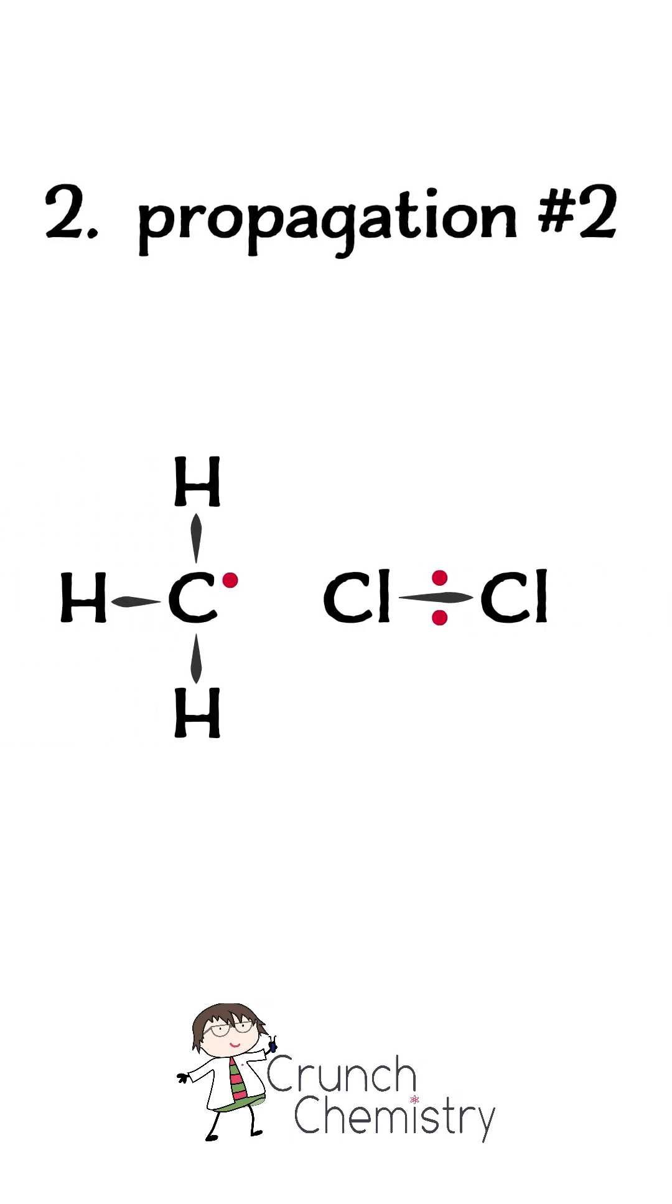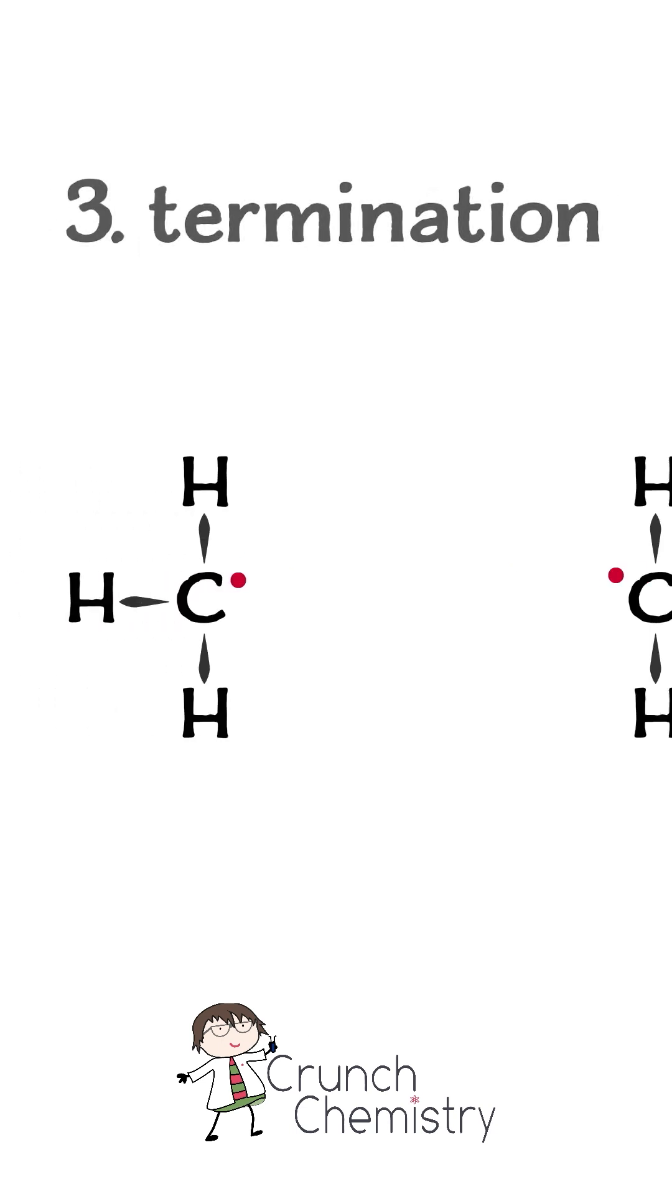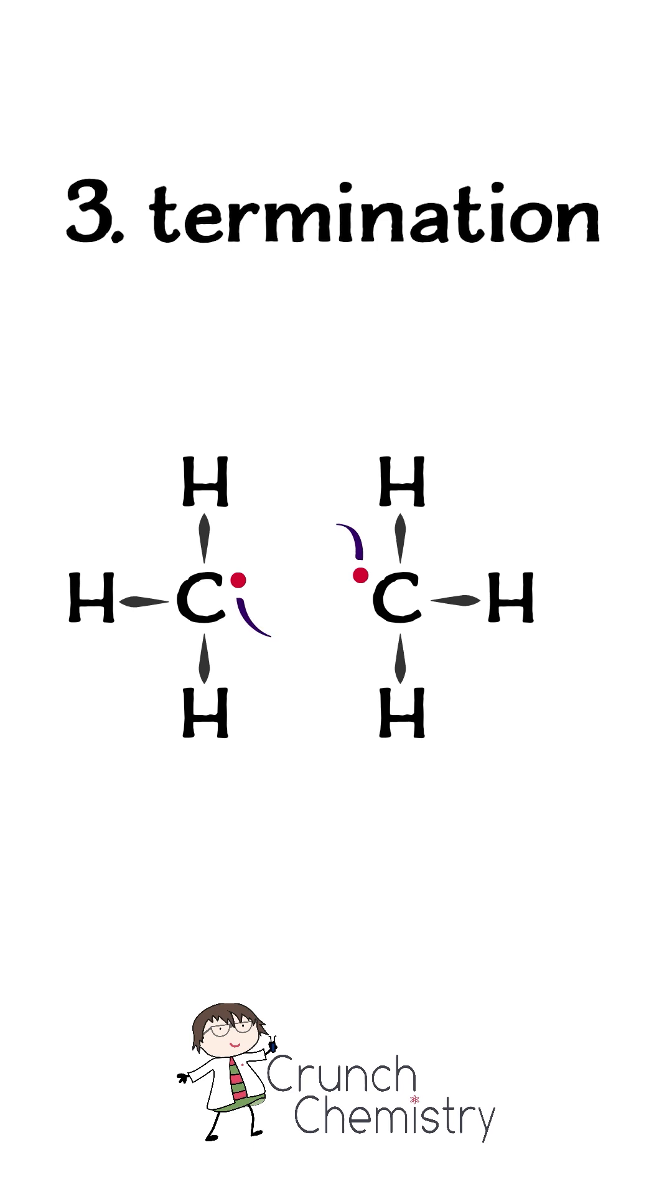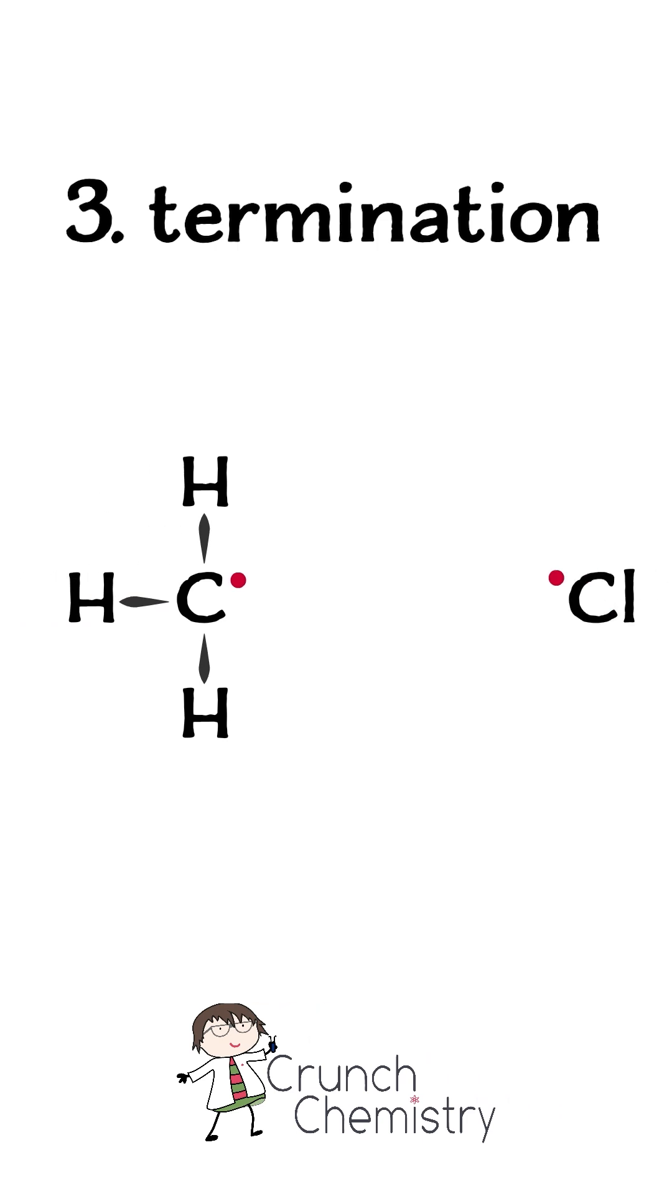Both steps are exothermic, as the bonds that are made in each stage are stronger than those that were broken. The third stage is termination, where two radicals react to form a non-radical. Since the concentration of radicals in reaction mixture is actually very low, chain termination is rare.